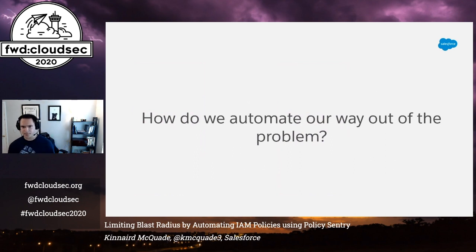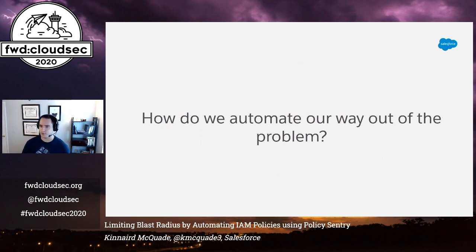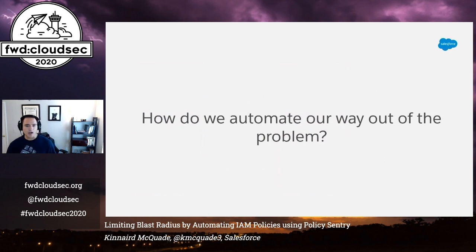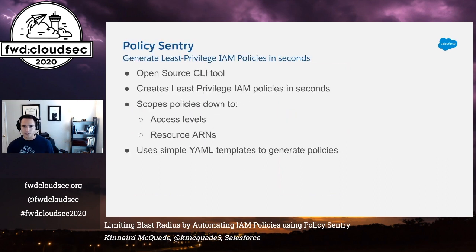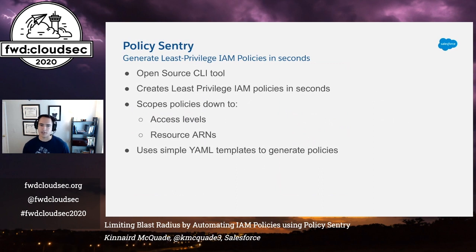If you make developers write those policies, you'll quite often end up with some of these results. Developers will use AWS managed policies for machine roles just to make things work in development, and sometimes this never gets fixed. They'll eyeball the IAM policy and use wildcard statements instead of specifying resource ARNs correctly. I've always been passionate about automating my way out of the problem. I knew how difficult and tedious it is to write IAM policies by hand, and I realized that nobody had written a tool that would write least privileged IAM policies focusing on resource constraints and access levels. So naturally, I wrote a tool called Policy Sentry.